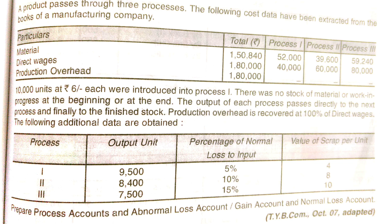We are going to solve a problem on process costing which has 3 processes — Process 1, Process 2, and Process 3. We have many expenses: direct wages, direct materials, and production overheads. We have 10,000 units at Rs. 6 each introduced into the process. The output units are: Process 1 — 9,500; Process 2 — 8,400; Process 3 — 7,500.